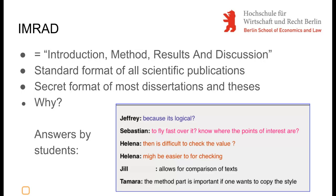IMRAD stands for Introduction, Method, Results and Discussion. Even though not all publications have only these headlines, the four sections — Introduction, Methods, Results and Discussion — dominate every scientific publication. It is also the secret format of most dissertations and theses, in the sense that this is what academic readers will look for.